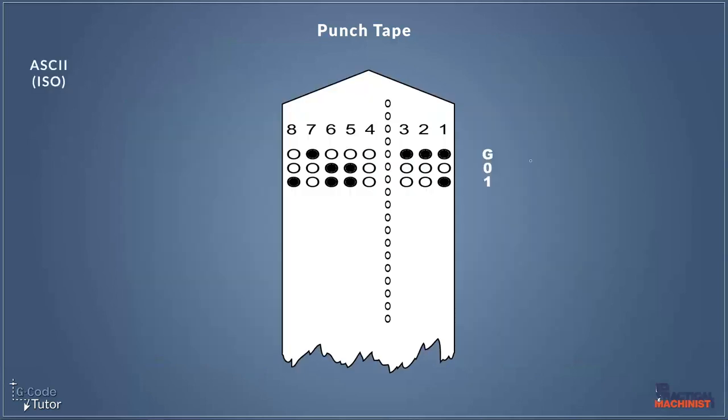So if we were going to write G01 in ISO it would look like this. So we can see here on the one line we have our one highlighted there and the rest of the numbers are empty so that displays a one and we're also punching a hole on channels five and six as well and because that would be an odd number we then punch a hole on column eight and that would give us an even number so the machine would be happy that it is in fact ISO and not EIA format.